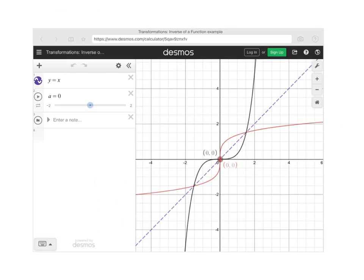So we are looking at the graph of a function and its inverse. The red graph is the function and the black graph is its inverse. As you can see, it is symmetric about the line y equals x. Here is y equals x, and here is this line of symmetry.